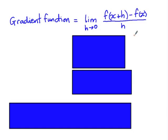So this is how we define the gradient function of any curve. It's the limit as h tends to zero of f of x plus h, take f of x, all over h. The numerator here is the difference in y values, and the denominator is the difference in x values.